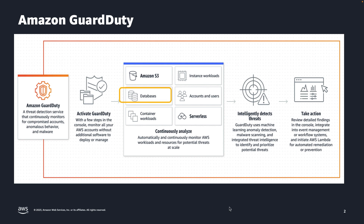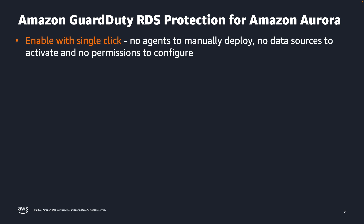I am going to elaborate more about Amazon GuardDuty threat detection for Amazon Aurora to identify potential threats to data stored in Amazon Aurora databases. Amazon GuardDuty RDS Protection can be turned on with a single action in the Amazon GuardDuty Management console, with no agents to manually deploy, no data sources to activate, and no permissions to configure. You can enable or disable the RDS Protection feature for any account in any AWS region where this feature is available within Amazon GuardDuty at any time.